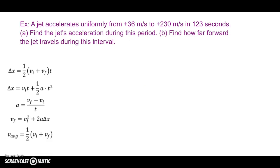Welcome to this video. We are going to do an example kinematics problem involving uniform acceleration. We have a jet that accelerates uniformly from positive 36 meters per second to positive 230 meters per second in 123 seconds.